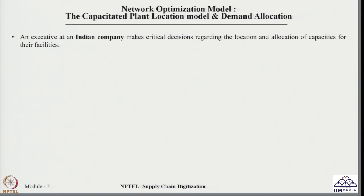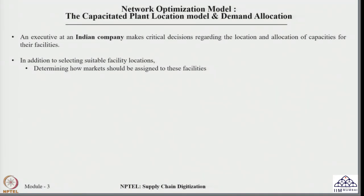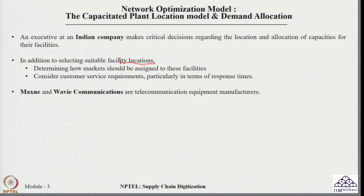To understand the demand allocation and capacitated plant location model, let us look at a simple case. Suppose there is an executive working in an Indian company making critical decisions about facility location and how capacity should be allocated to minimize supply chain cost. The decision involves not only selecting facilities but also assigning markets to these facilities.